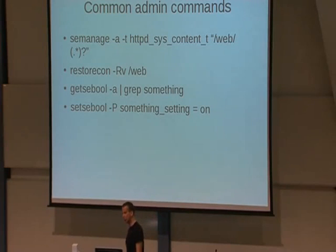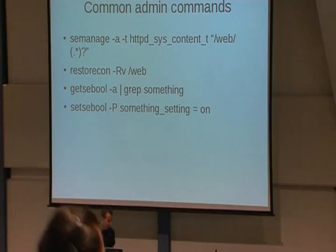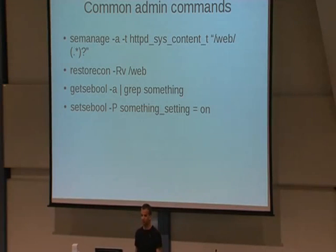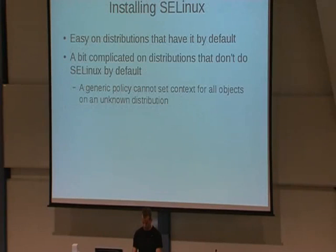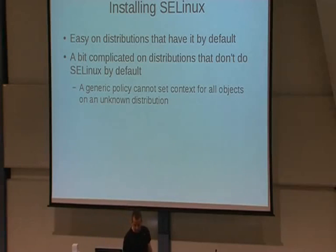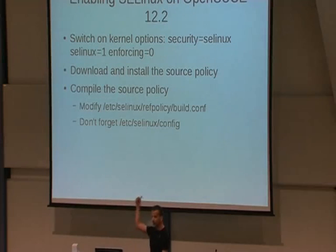For booleans, `getsebool -a` shows all available booleans — grep for something like ftp or whatever you need and you'll find the right boolean easily. Now regarding installing SELinux: this is covered in more detail in an article on my website. Basically, you need to enable some kernel options: `CONFIG_SECURITY_SELINUX=y` and `enforcing=0` to put SELinux in permissive mode to ensure it still works.